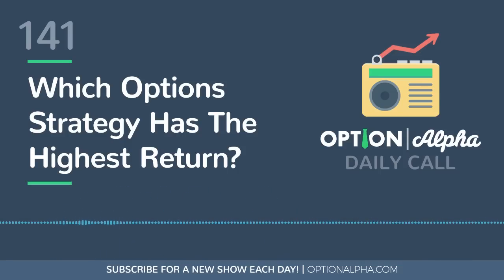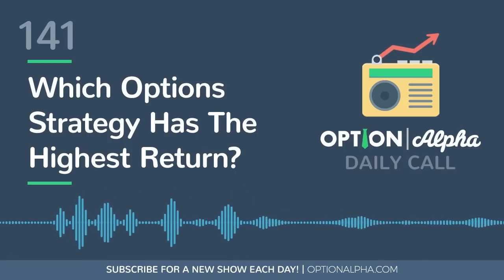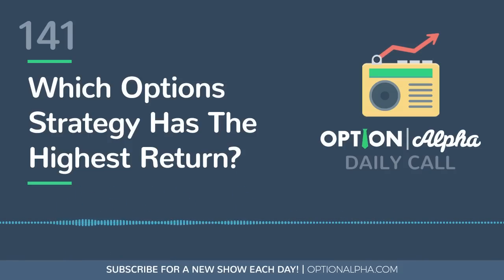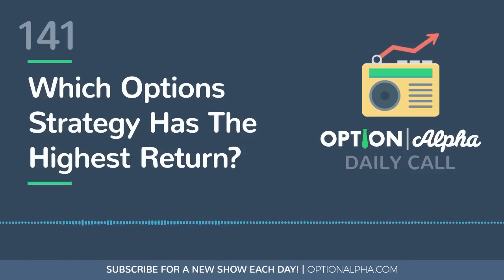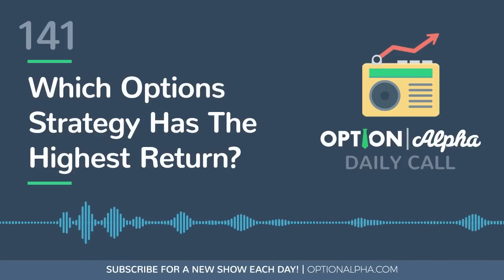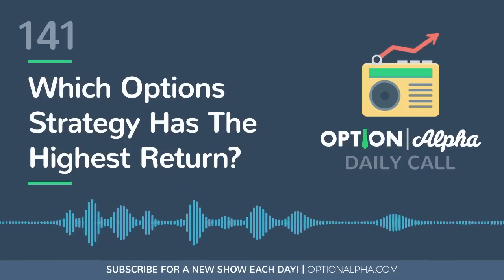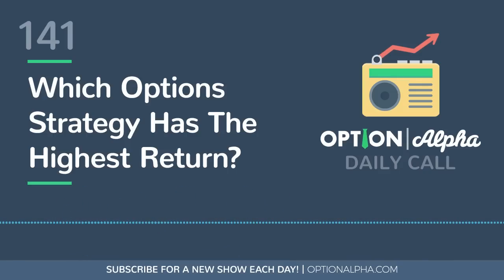Some people have emailed me saying they're looking at a strategy that could return 10% a year but might go through a 30% drawdown, and they'd rather have an 8% return with maybe a 10% drawdown. That's the differentiation — it's not that one is bad or better than the other, it's what type of portfolio curve and framework do you want in your account going forward.